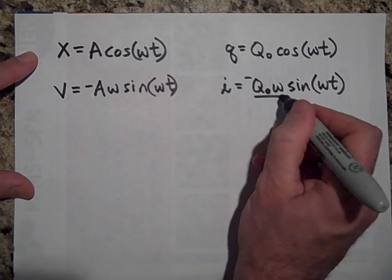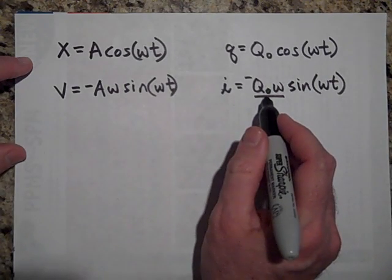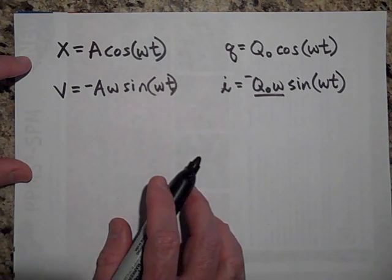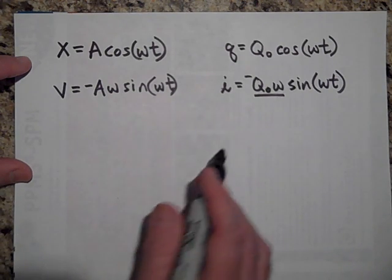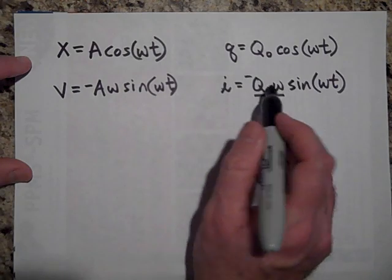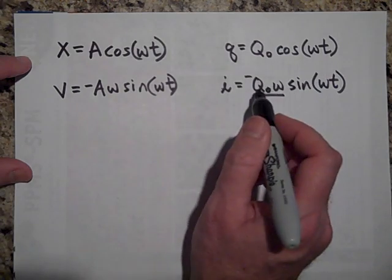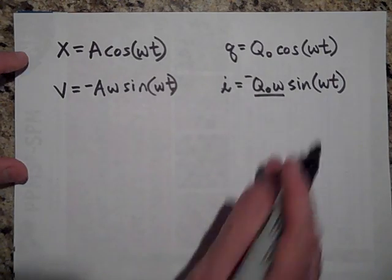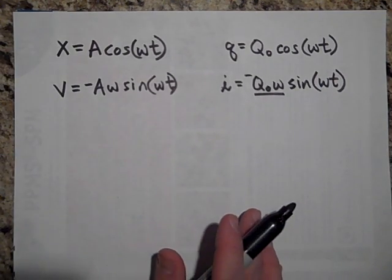So this right here, that's probably going to be i initial. I'm sorry, that's going to be the maximum—that's not i initial, I'm sorry about that. This is the maximum i. Okay, I gotta go, I'm out of time.